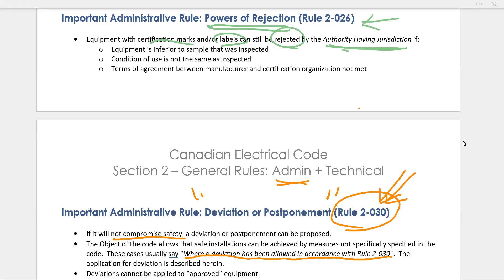When applying for a deviation, the Authority Having Jurisdiction has to review the request and grant the deviation. You must clearly state what you're doing that is different, and you must be granted special permission before the work is commenced — that's an important point. The intent of Rule 2-30 is to allow deviations from code installation requirements; however, it is not intended to seek deviation on approved equipment. Approved equipment is approved specifically, and you do not deviate from that.